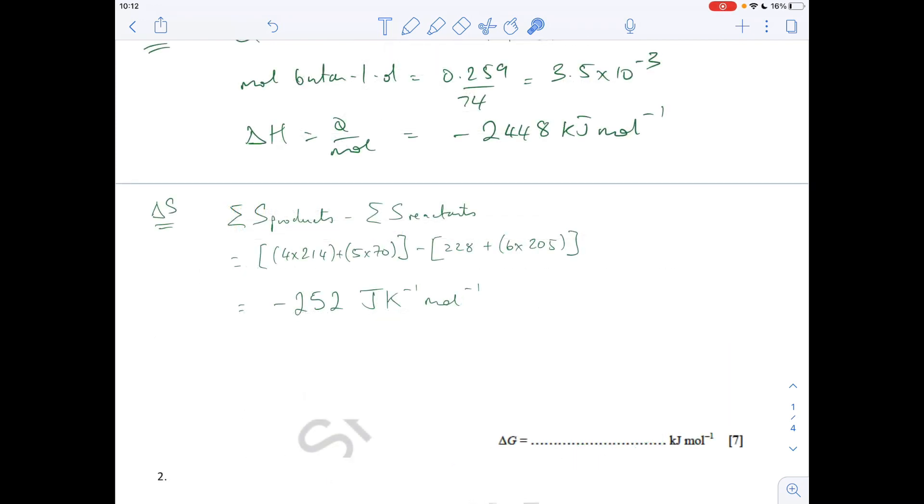Moving on to delta S now. So the formula, the sum of the entropies of the products minus the sum of the entropies of the reactants. So there's the numbers in there. And you should get an answer of minus 252 joules per kelvin per mole.